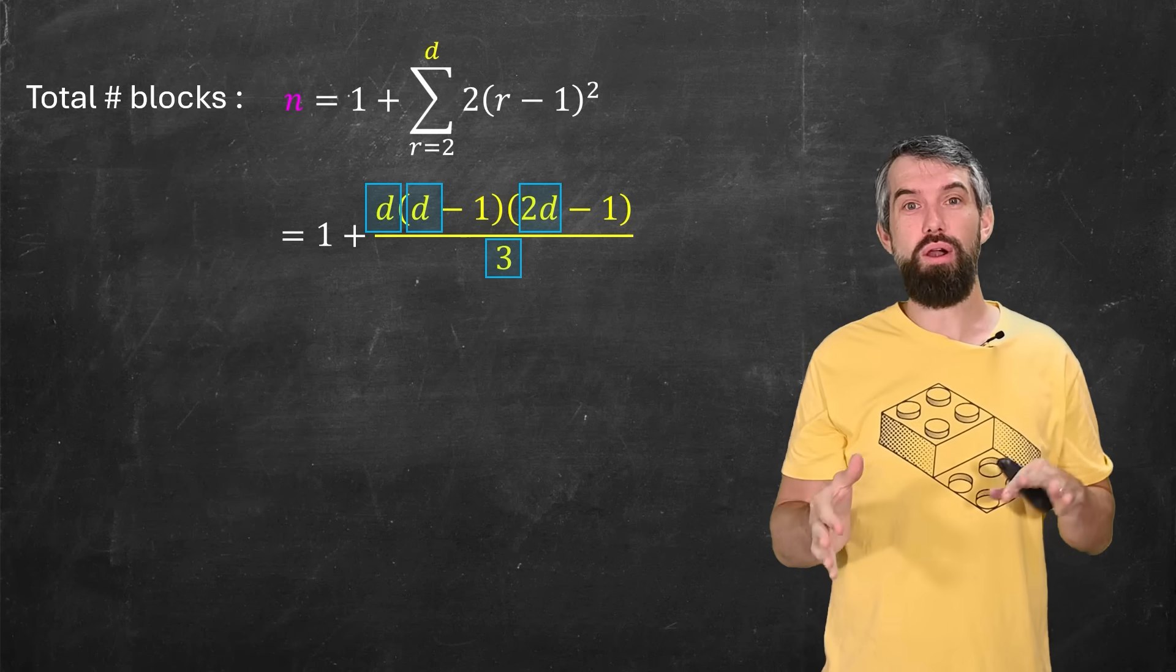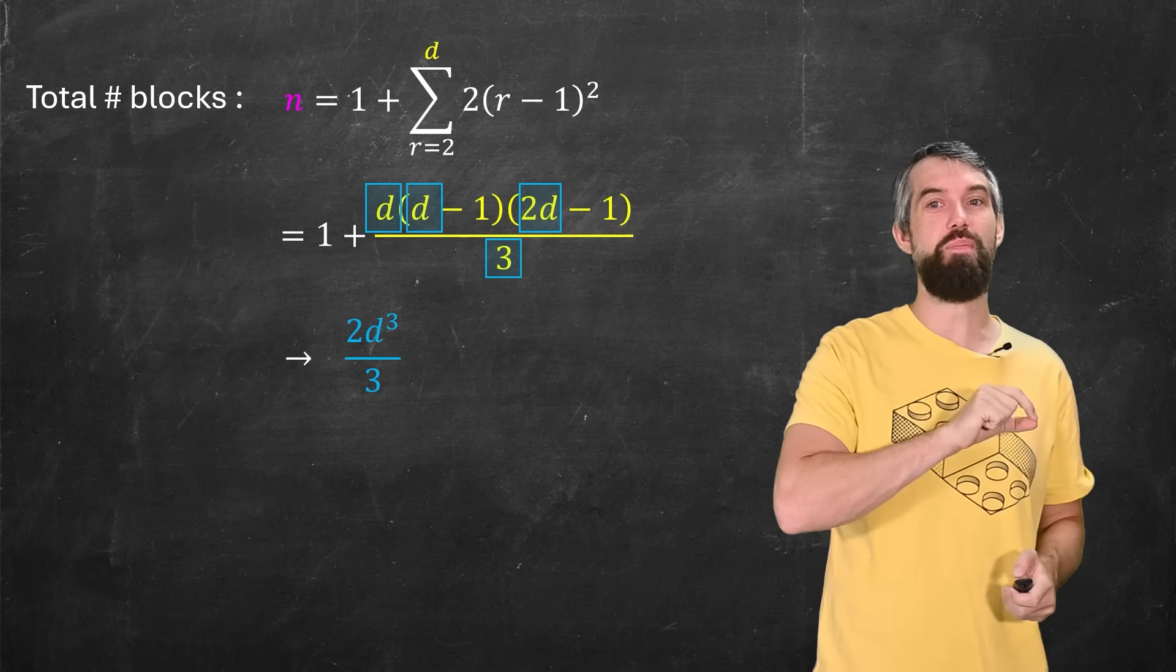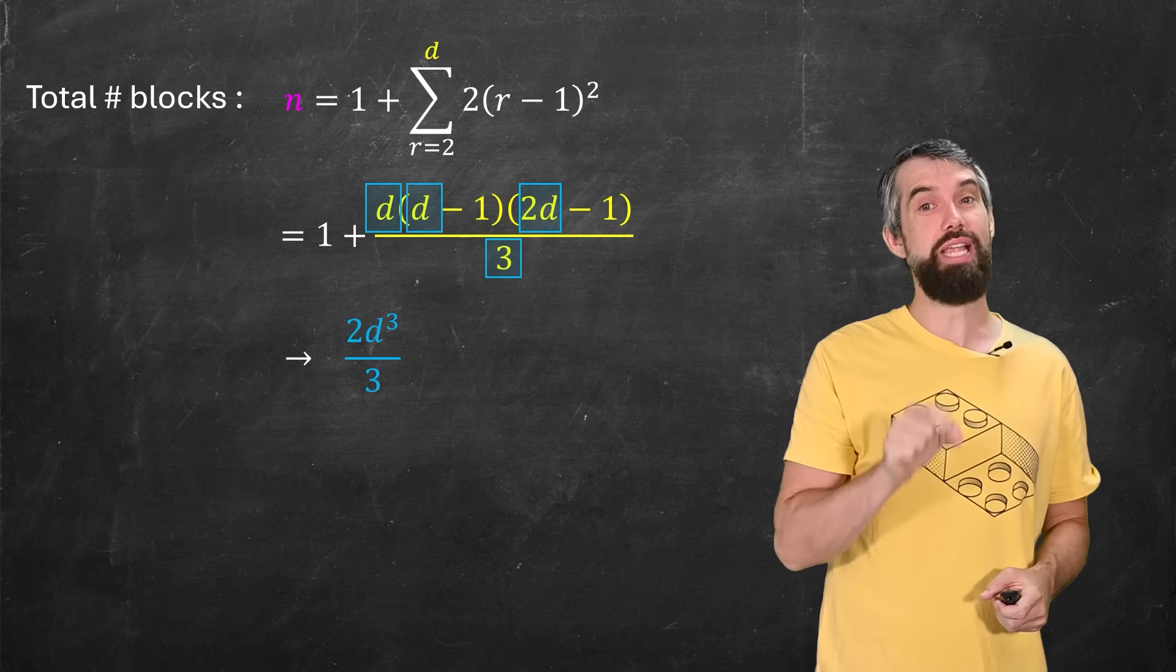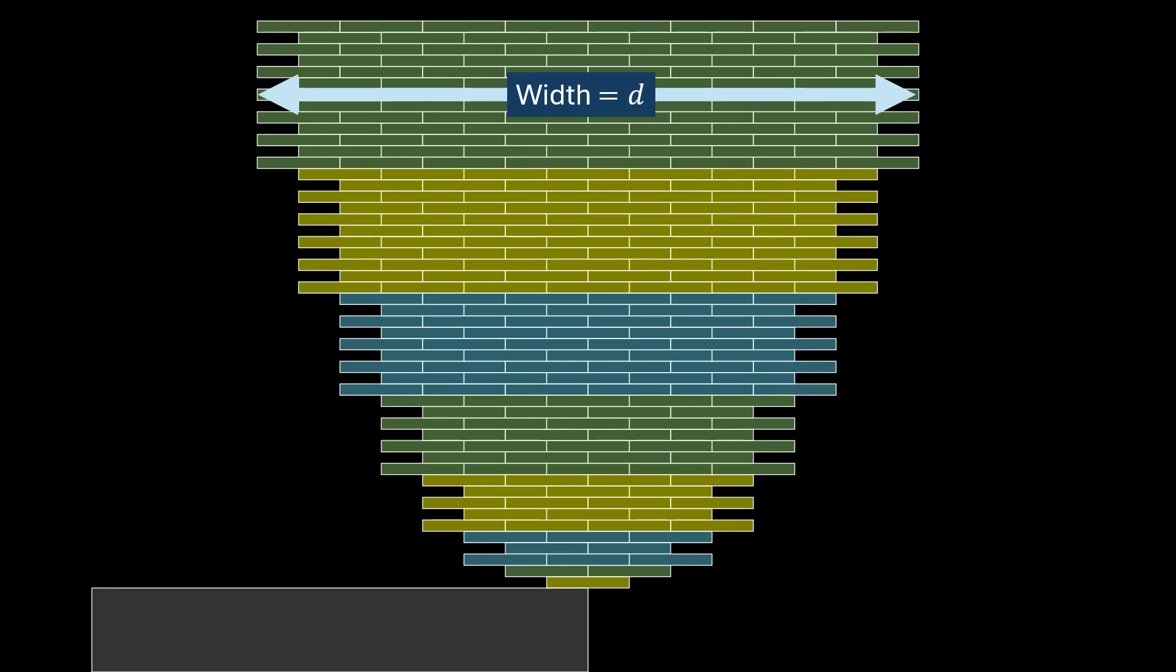Now, as N gets large, I can just focus on the largest term here, so this is going to be D times D times 2D divided by three. As N gets large, this will tend to be 2D cubed divided by three. So for our tower, if I say it has a total width of D blocks at whatever the highest level that you've got to, the overhang is, well, just half that amount, half the number of blocks. So it's an overhang of D divided by two.